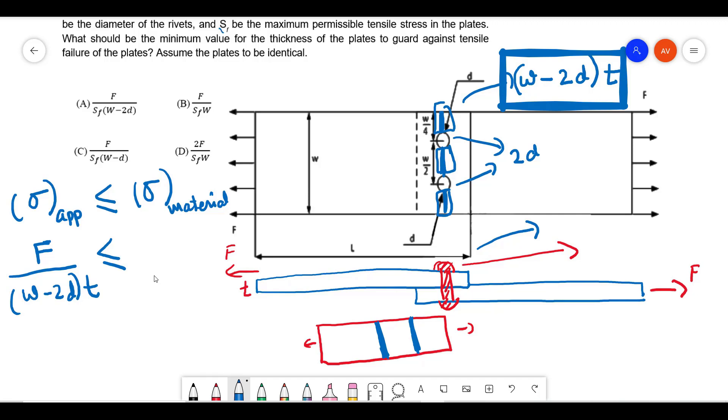Therefore, rewriting it, you can write your thickness t should be greater than or equal to F by (W minus 2d) times SF.